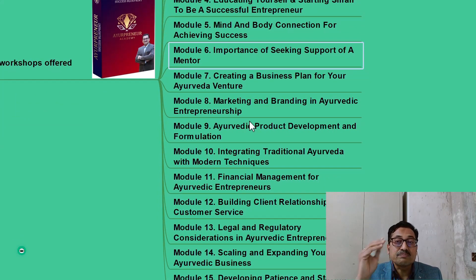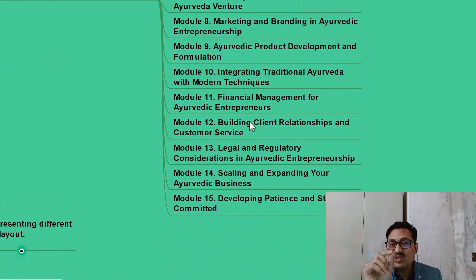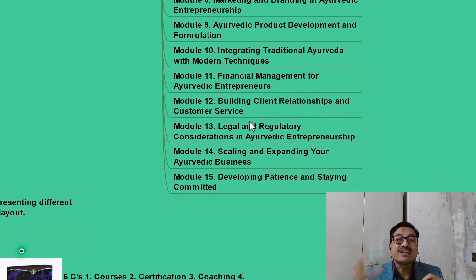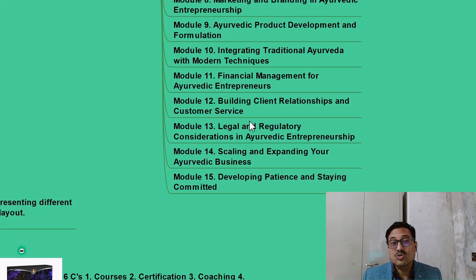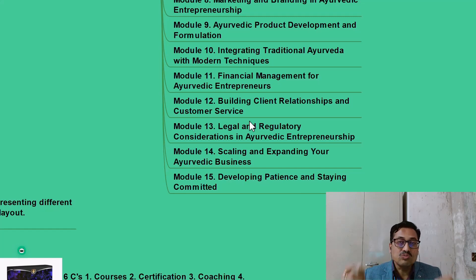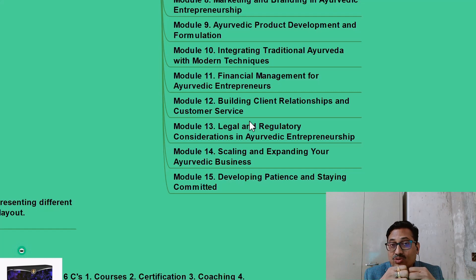Module 7 is creating a business plan for an Ayurvedic venture. Module 8 is marketing and branding for Ayurvedic entrepreneurship. Module 9 provides ideas about Ayurvedic product development and formulations. Module 10 covers integrating traditional Ayurveda with modern techniques. Module 11 is financial management for Ayurvedic entrepreneurs — this is one of the biggest gaps in medical education, as finance is not taught in the curriculum, leaving students financially illiterate and unable to think as businesspeople.